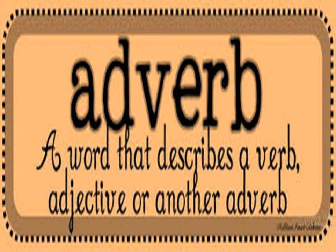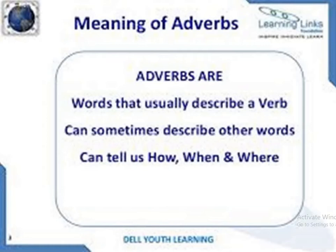Next is the adjective. What are adjectives? Adjectives are the describing words — they describe the noun and the pronoun. An adverb describes the verb, adjective, and adverb itself. So coming back to the definition: adverbs are usually used to describe a verb, can sometimes describe other words, and can tell us how, when, and where. Adverbs give us the answers to the questions how, when, and where.